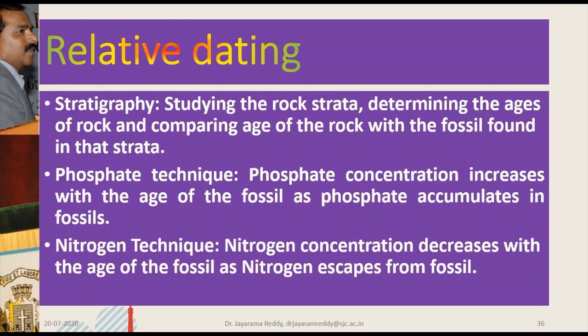Relative dating techniques: Stratigraphy is used where the fossil is discovered from a stratum of rock — if you know the age of the rock, the age of the fossil is correlated with its strata. This is an indirect method. Similarly, phosphate concentration of a fossil increases with the age of the fossil because phosphate accumulates in it — the more phosphate present, the greater the age; less phosphate means a younger fossil. But again, this is a relative method.